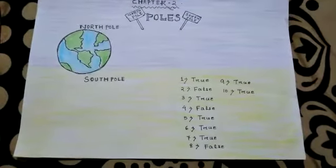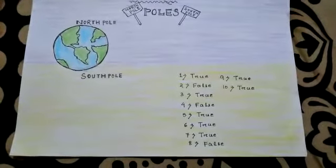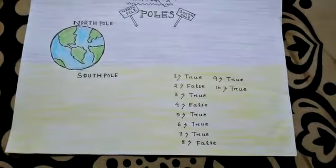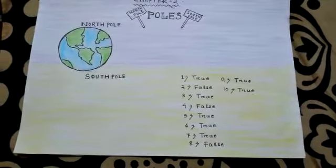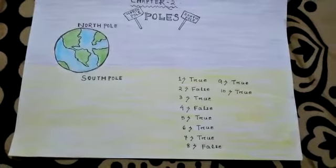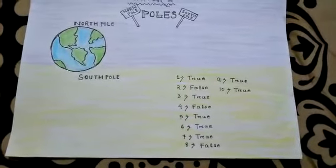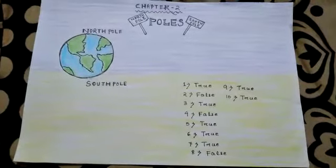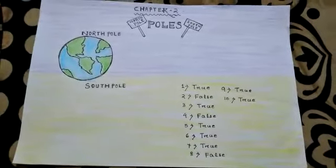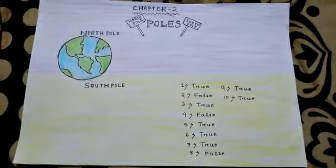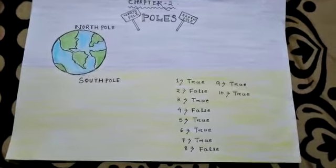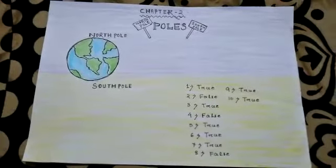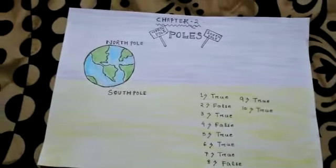He was the first person to reach the North Pole on 6th April 1909, so the answer is true. Number ten: Antarctica makes up more than three-fourths of the global freshwater reserves — yes, under the ice in the form of ice, three-fourths of the world's global freshwater reserves are over Antarctica. This is an interesting fact you should remember to develop your general knowledge. That is all about Chapter 2.